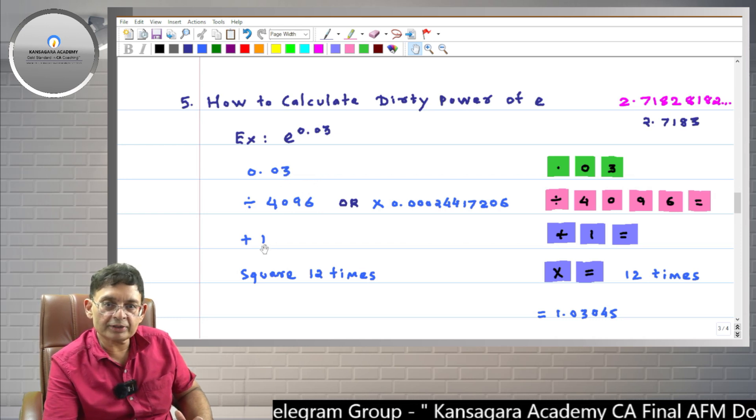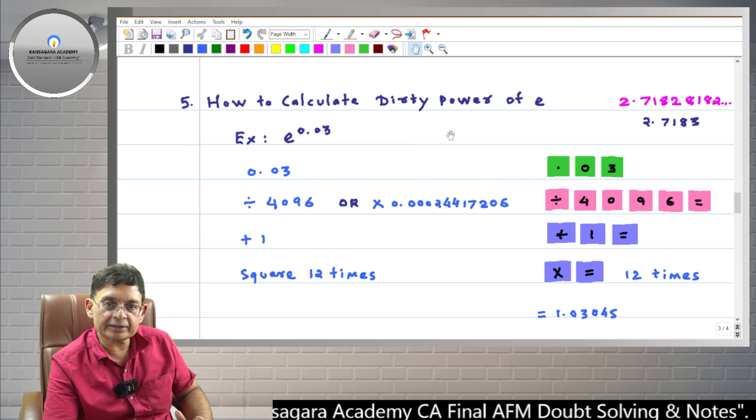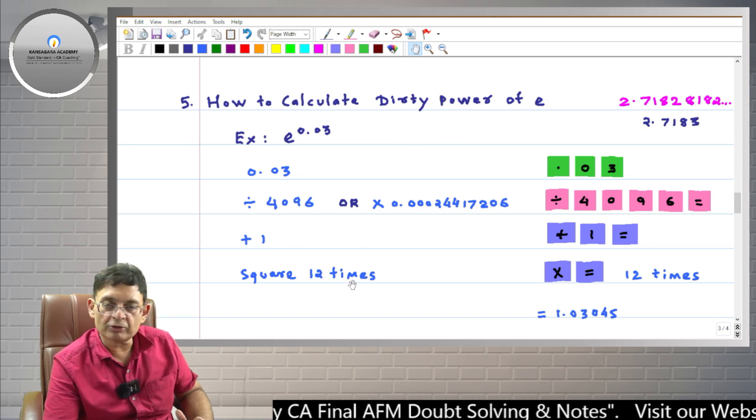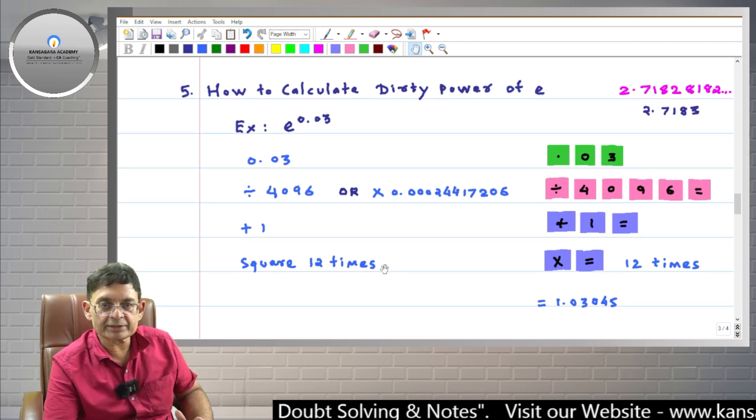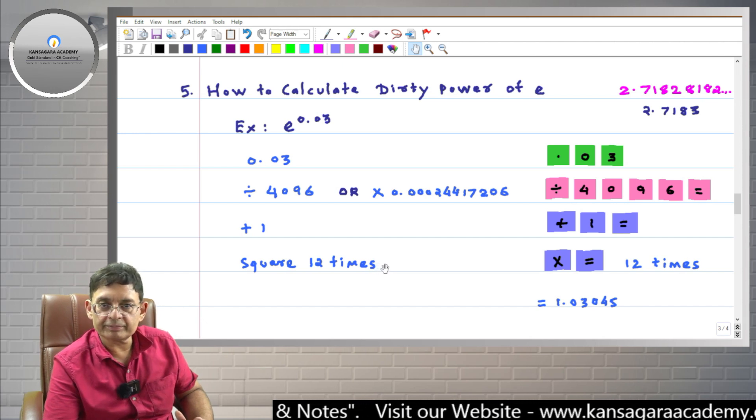Then friends, we multiply that chord with the power, and then here we decode. It means there we had deducted minus 1, so here we add plus 1. We do plus 1. And then we had taken 12 times root, so here we square up 12 times. So we decode, reverse the process. So friends, you understand that this process is basically a special case of the dirty power calculation with simple calculator.